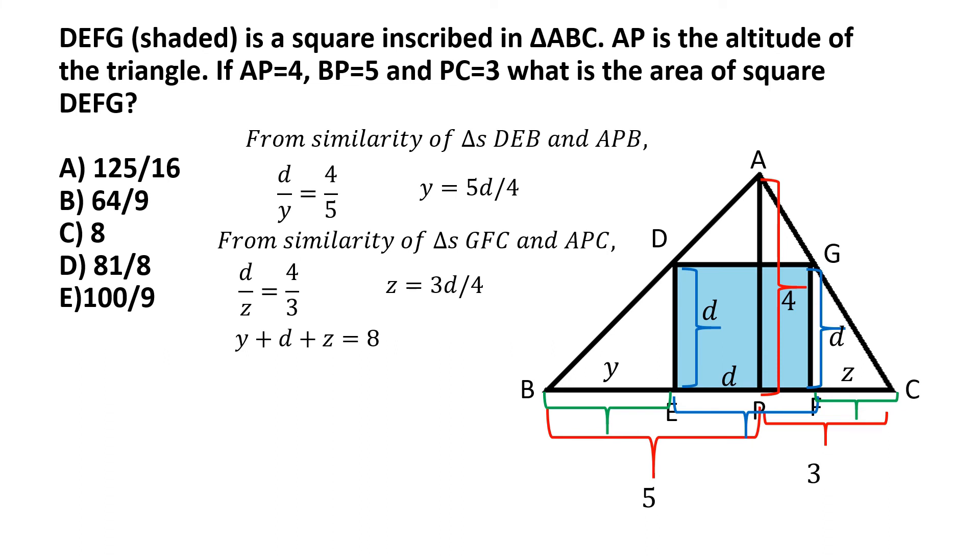Y plus d plus z, the sum of those three lengths, will be equal to the length of BC, which is equal to BP plus PC. And BP is 5, PC is 3, so 5 plus 3 makes 8. So we can write y plus d plus z is equal to 8. This is from simple geometry.